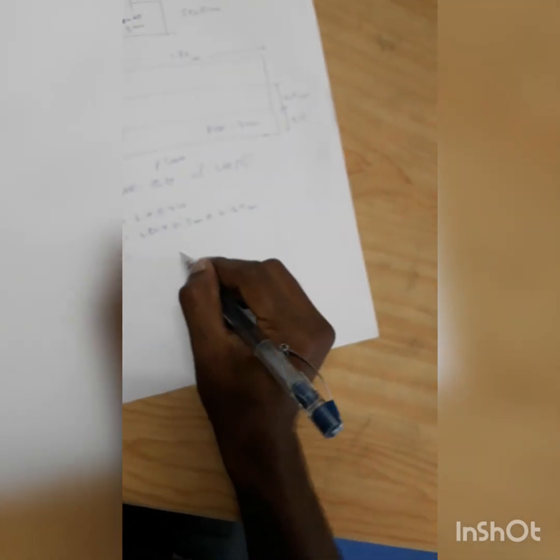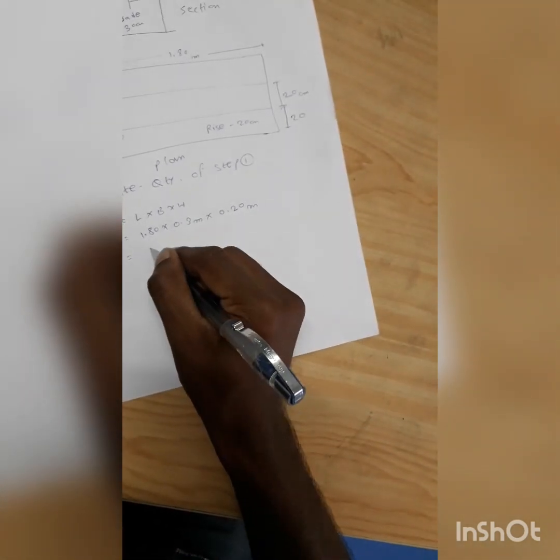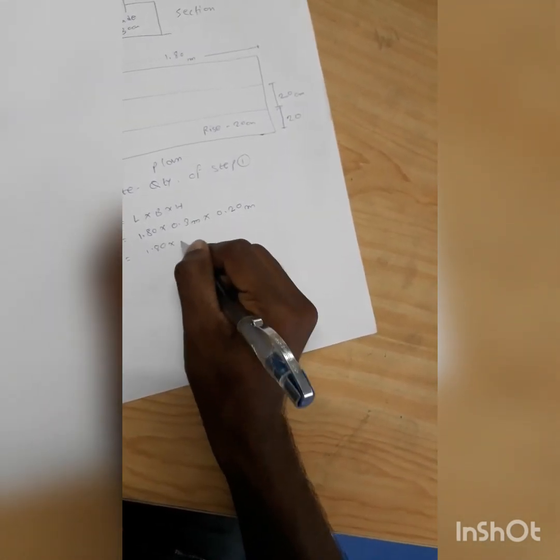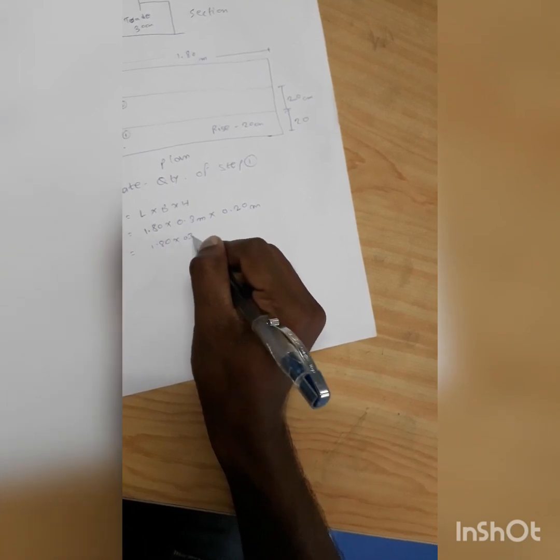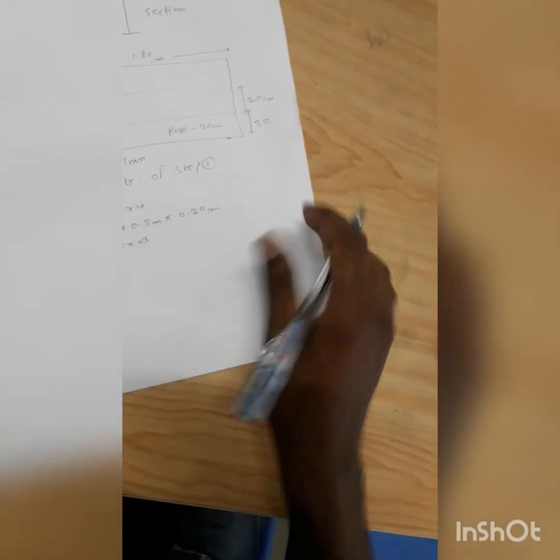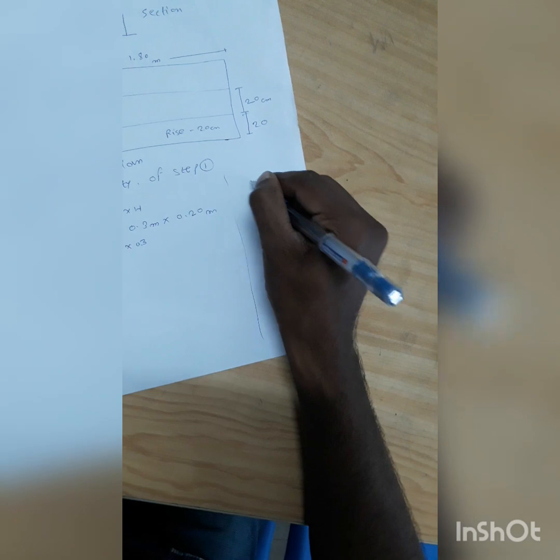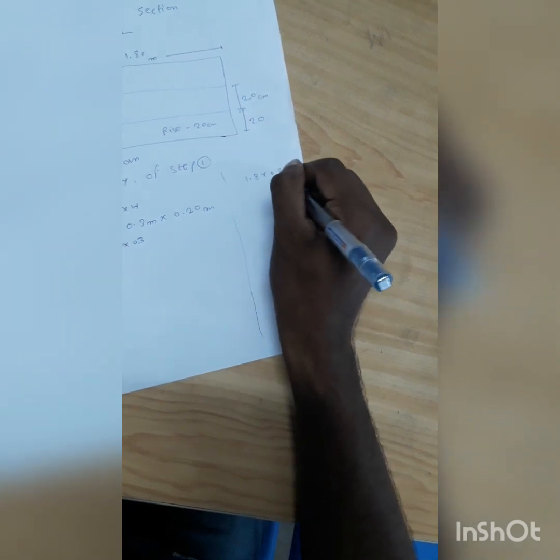While calculating 1.8 into 0.3, means 1.8 into 3 divided by 10, we can do 1.8 into 0.3. So I will do here 1.8 into 0.3.